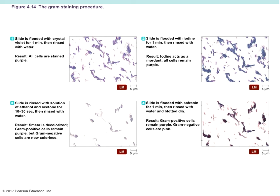The most important staining procedure in introductory microbiology is gram staining. Gram staining generally takes place in four steps. It allows us to differentiate between gram-positives and gram-negatives. From chapter three, you'll recall that gram-positives are more susceptible to antibiotics, whereas gram-negatives are less susceptible — they're more resistant. They have an outer layer that protects them from antibiotics and detergents, so gram-negatives are generally more difficult to kill.